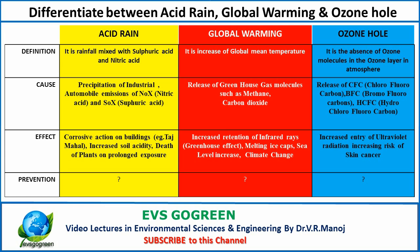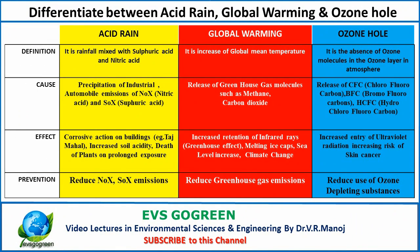Global warming leads to melting ice caps, sea level rises, and eventually causes climate change. Ozone hole causes an increased entry of ultraviolet radiation because the ozone layer is devoid of, or has fewer, ozone molecules, allowing ultraviolet radiation to enter. This can increase the risk of incidences of skin cancer. Those were the effects of all three separate environmental phenomena.